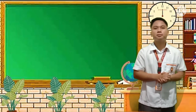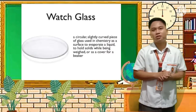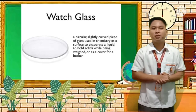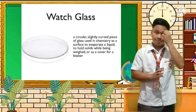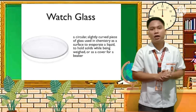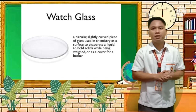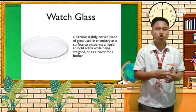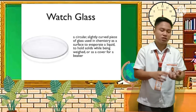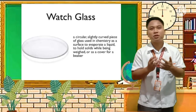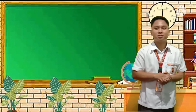Next we have the watch glass. It is a circular, slightly curved piece of glass used in chemistry as a surface to evaporate a liquid, to hold solids while being weighed, or as a cover for a beaker. You can place a certain object on it to examine its texture and appearance during experimentation.